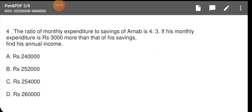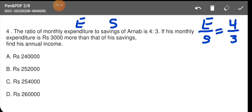The ratio of monthly expenditure to saving of Arnav is 4 by 3. If his monthly expenditure is 3000 more than that of his saving, find his annual income. We need to find annual income. Expenditure we show by E and saving we show by S. In this question, they clearly wrote E by S is 4 by 3. Second, they wrote that monthly expenditure E is 3000 more than saving, so E equals S plus 3000.